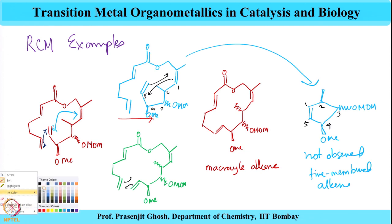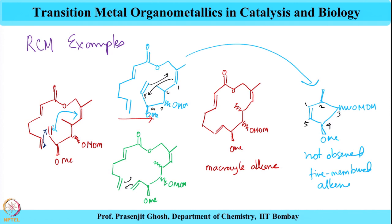So what we see, which is becoming evident over and over again, is that ring closing metathesis is a very powerful reaction, but it has a particular purpose: it is effective only for creating large macrocycles which have very little ring strain. The macrocyclic alkene favored here is a 14-membered ring. So this 14-membered macrocycle is favored as opposed to other products that could have been formed from metathesis of different alkenes, which are not favored in ring closing metathesis.